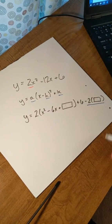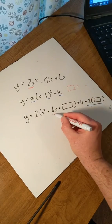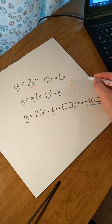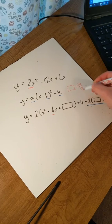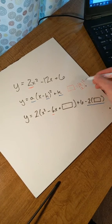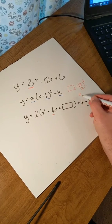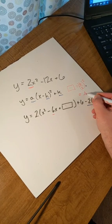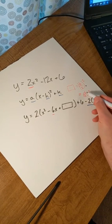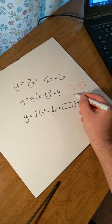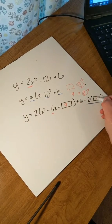This blank number is always going to be the middle number — which is called B — divided by 2, squared. So if we look at this number here, the middle number is 6, divided by 2, then squared. 6 divided by 2 is 3. 3 squared is 9. So we're going to put a 9 here and a 9 here.